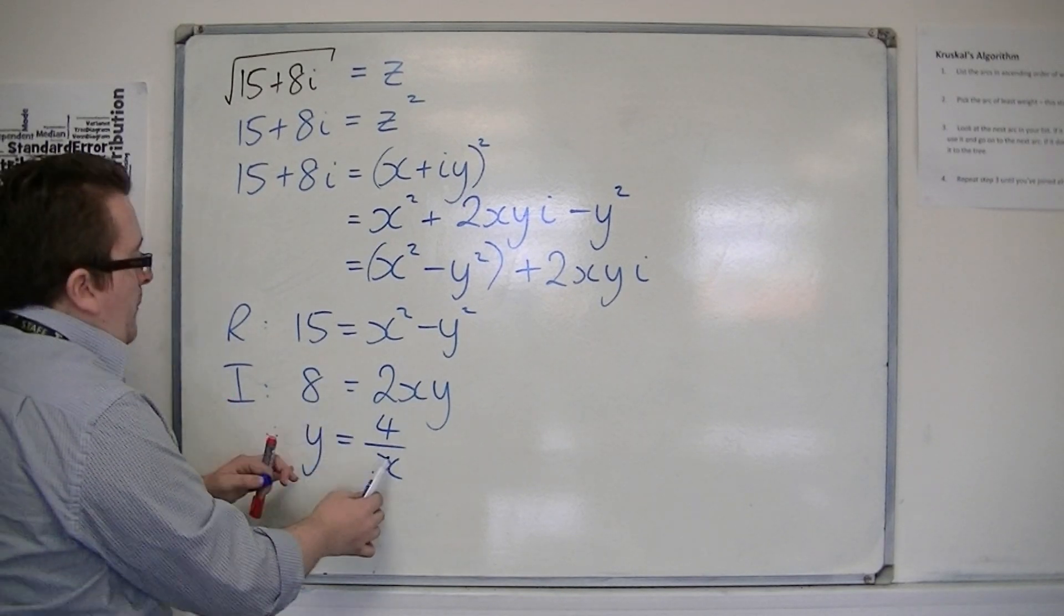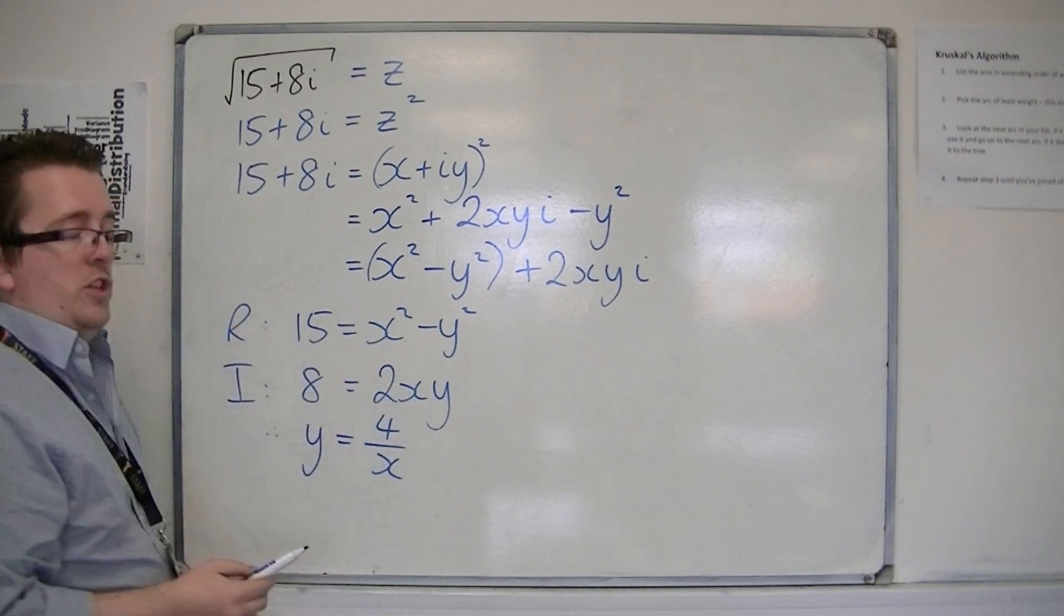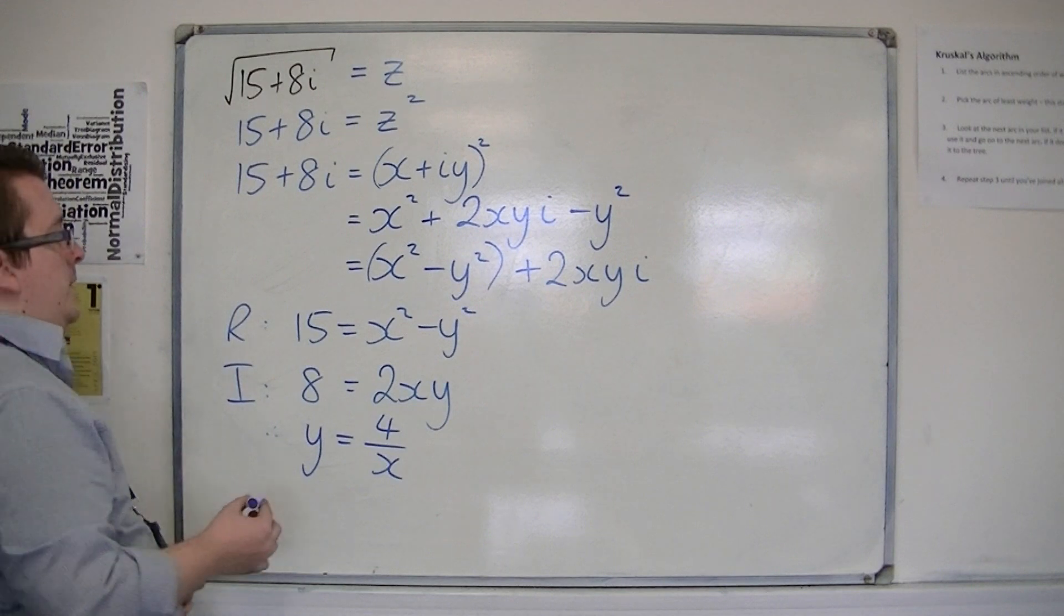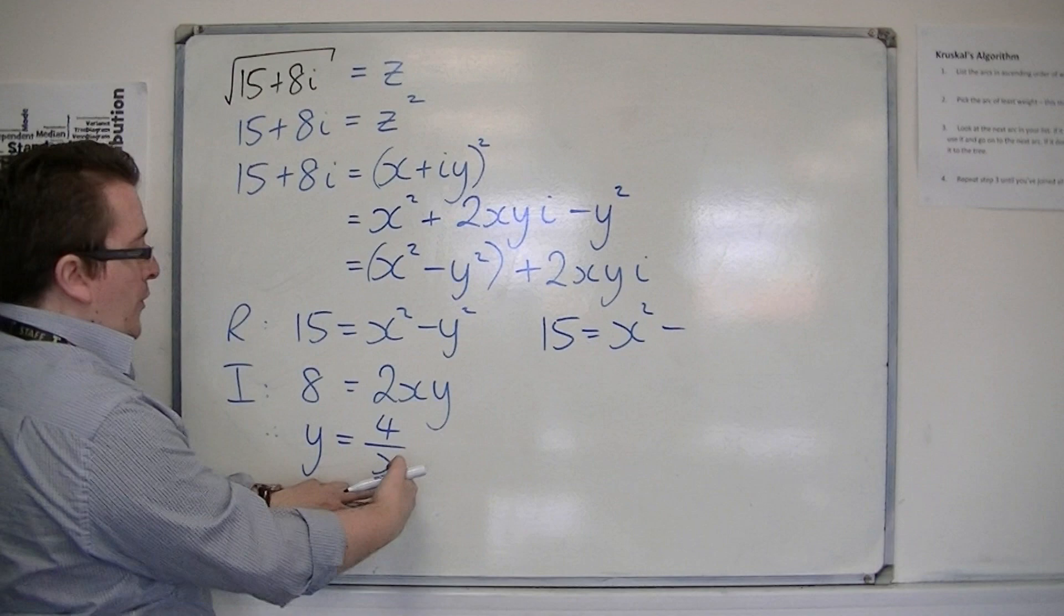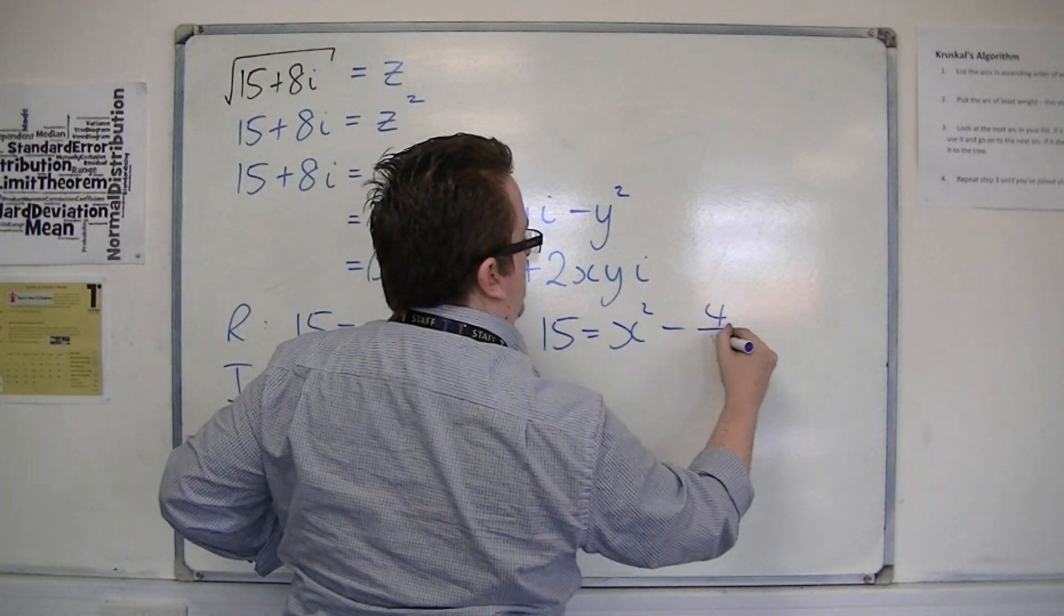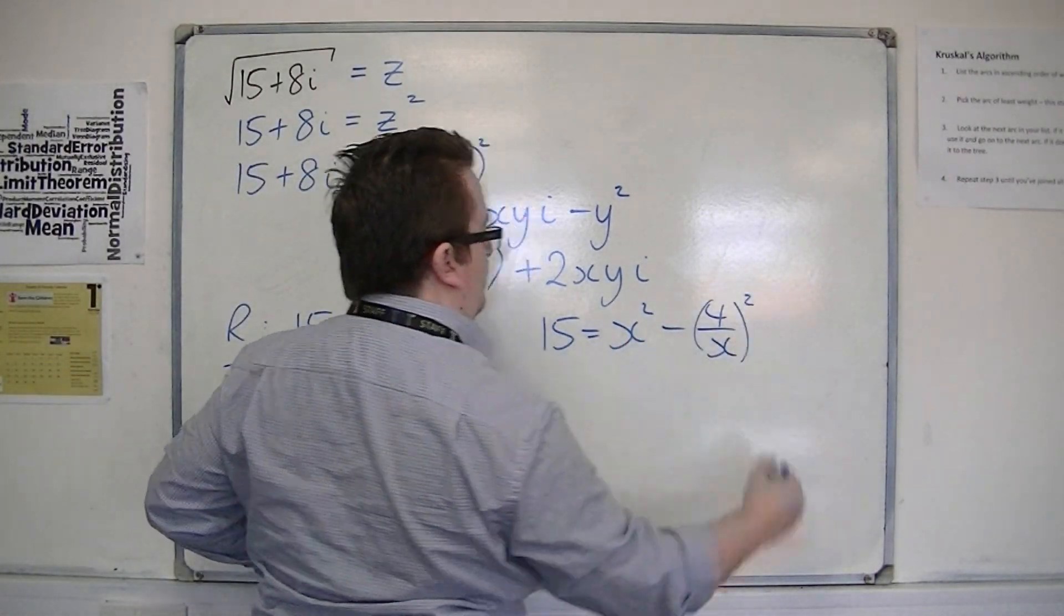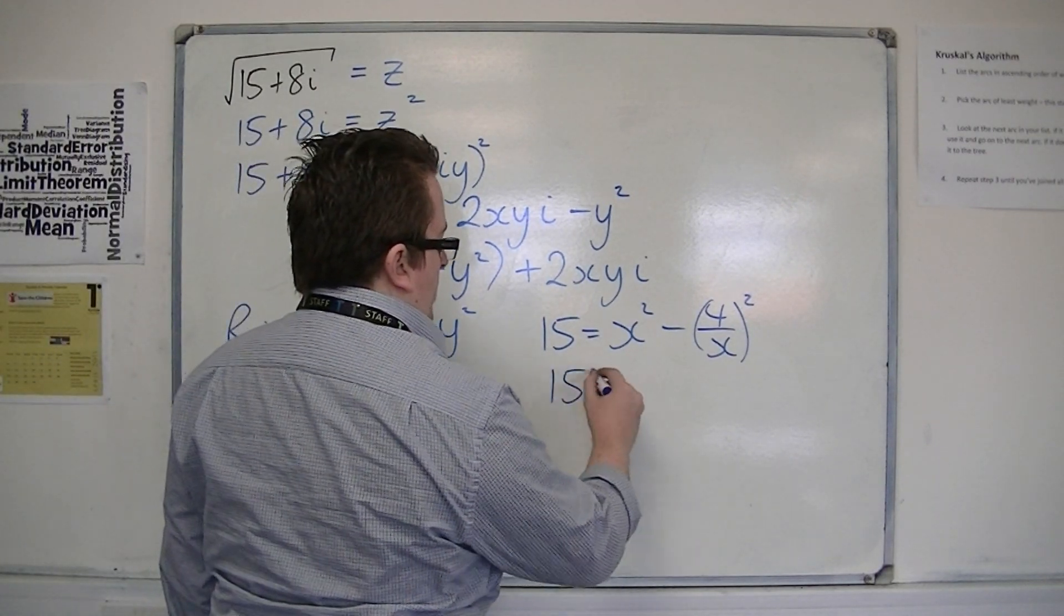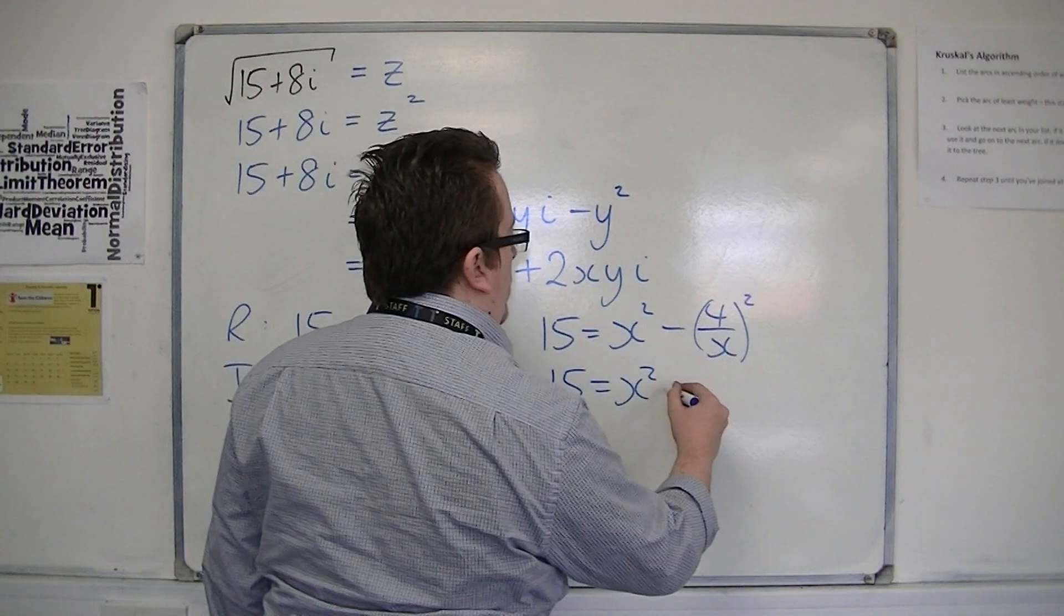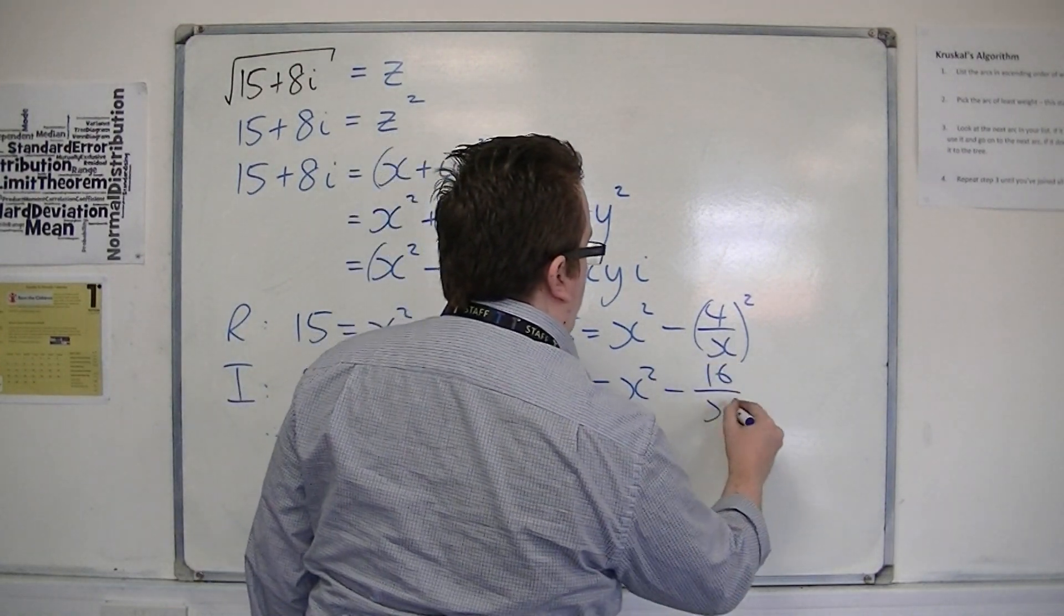And then I'm going to substitute this equation into this equation. So I'm going to get 15 is equal to x squared minus 4 over x all squared. Now that's 15 equals x squared minus 16 over x squared.